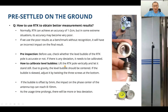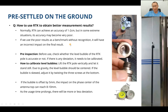How to use RTK to obtain better measurement results? Normally the RTK can achieve accuracy of one to two centimeters, but in some extreme situations its accuracy might become very poor. If we use poor results as a benchmark without recognizing this, it will have an incorrect impact on our final results. First, do a pre-inspection: before using the RTK device, check whether the level bubble of the RTK pole is accurate. If there is deviation, it needs to be calibrated.